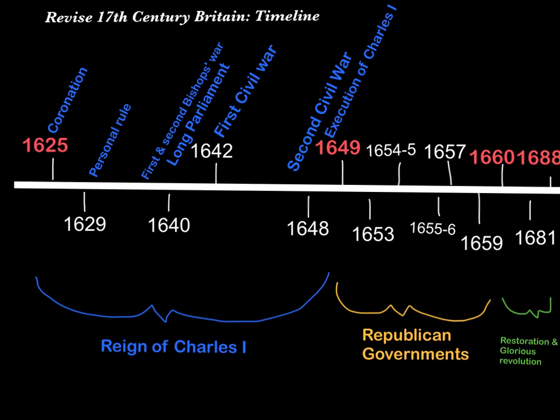Charles was effectively almost bankrupt at this point and had to call the Long Parliament back. This parliament became known as the Long Parliament because they were around for a number of years, in fact all the way through the First and Second Civil Wars. The build-up from the formation of the Long Parliament to the First Civil War included a number of mistakes by Charles I. One key mistake was made in 1641, when an Irish rebellion of Catholics who were starting to attack Protestants in Ireland occurred.